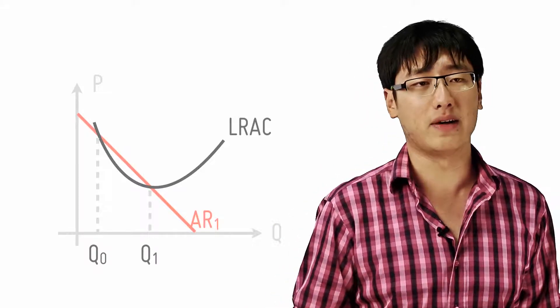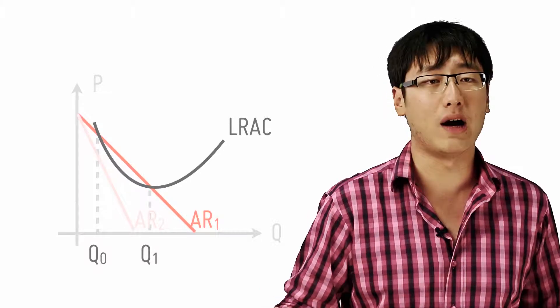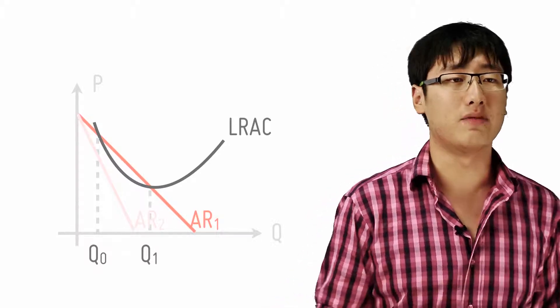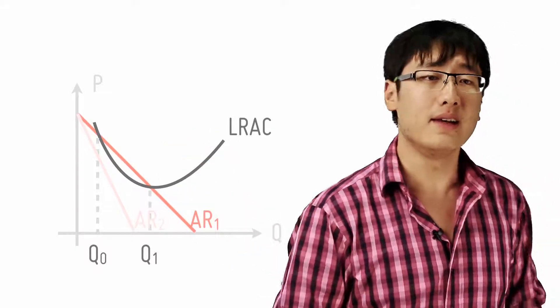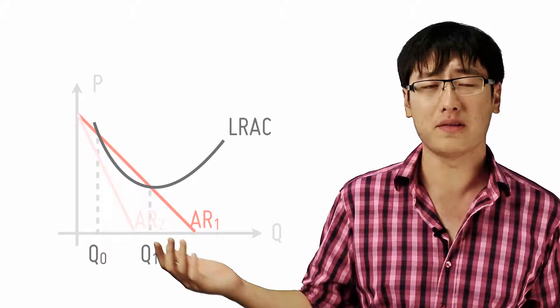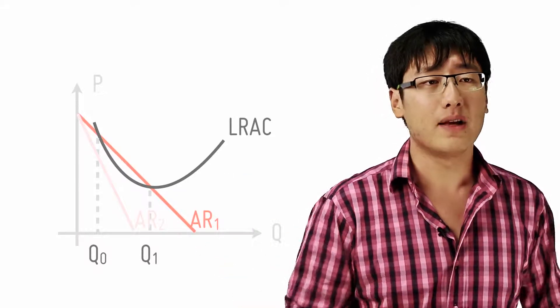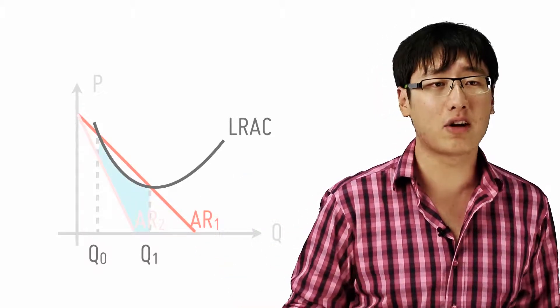Now, if there were two firms instead of one firm, each charging the same price and supplying half the industry output, they will each have a demand curve of demand 2, AR2. In this case, each of them will not be able to make a normal profit at any quantity. The LRAC lies above them all the time. There is no price that will allow them to cover costs.